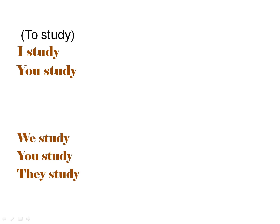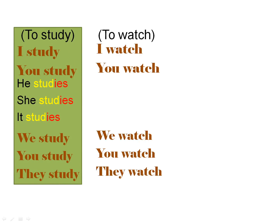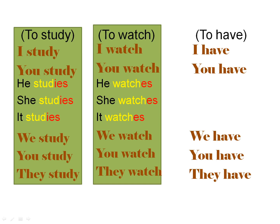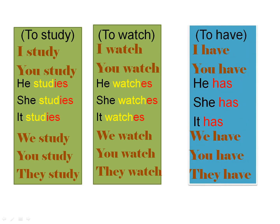More examples: 'to study' — I study, you study, we, you, they study. But he, she, it — it becomes 'studies' with 'ies'. 'To watch' — I watch, you watch, he watches, taking 'es'. And the verb 'to have' is a little different: I have, you have, we have, they have. But with he, she, it — it becomes 'has'. We don't add 's' or 'es' or 'ies' — we change the verb entirely. This is the only exception in English verbs.